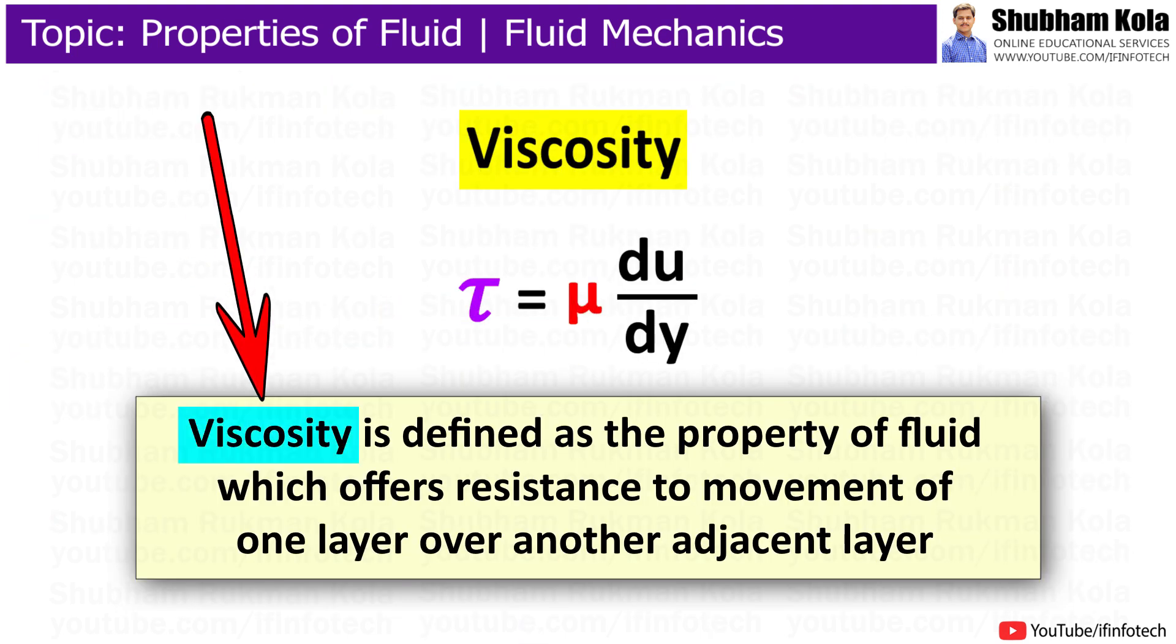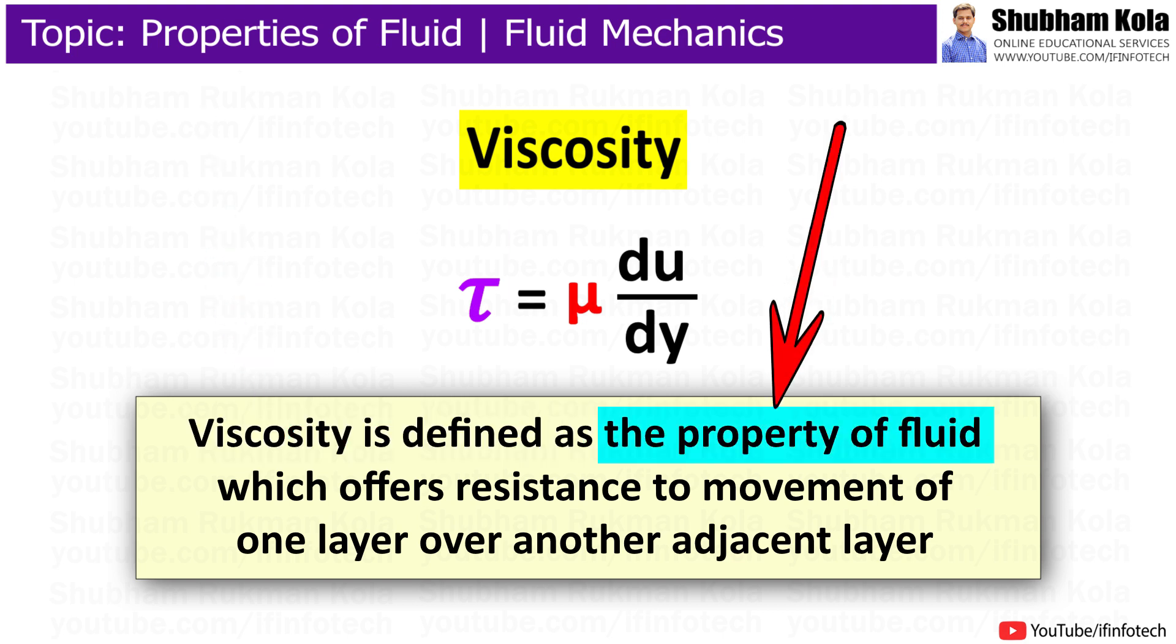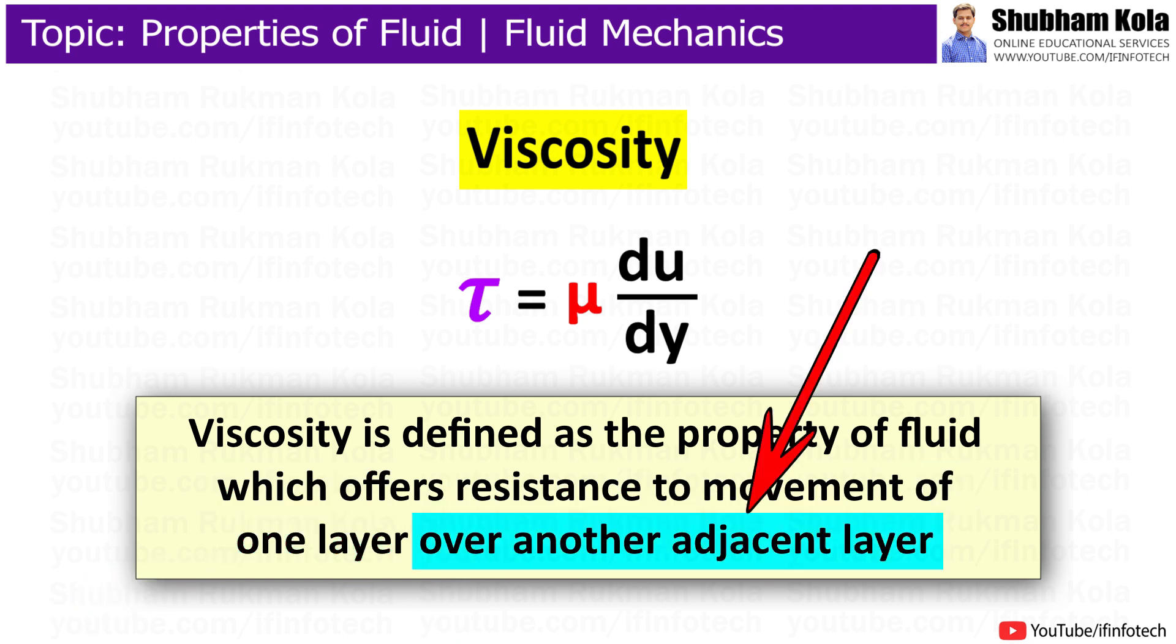The next term is viscosity, which is defined as the property of fluid that offers resistance to movement of one layer over another adjacent layer. Viscosity is represented by the Greek letter μ (mu).